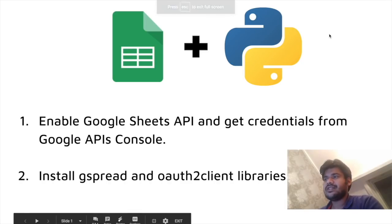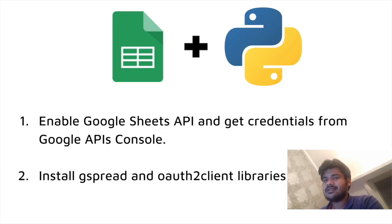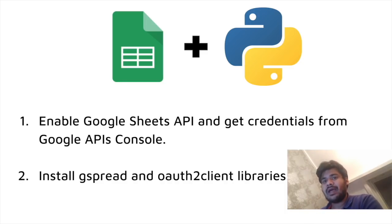Before we start accessing data from Google Sheets using Python, we have to satisfy two requirements. The first is enabling the Google Sheets API in the Google APIs console, and the second is downloading the relevant libraries we are going to use to access data from Google Sheets using Python. Let's go ahead and satisfy these requirements.